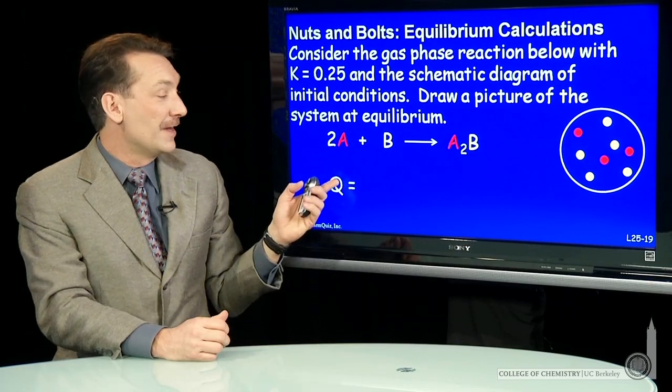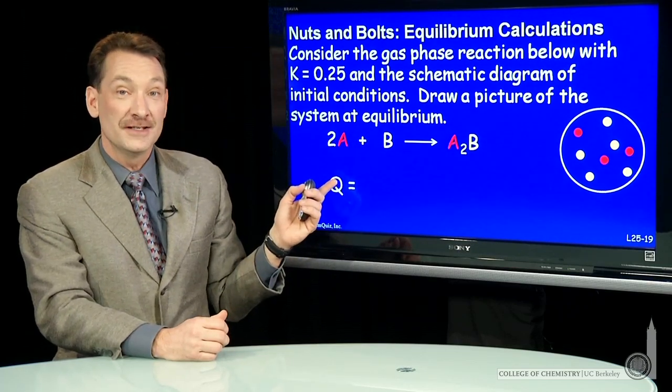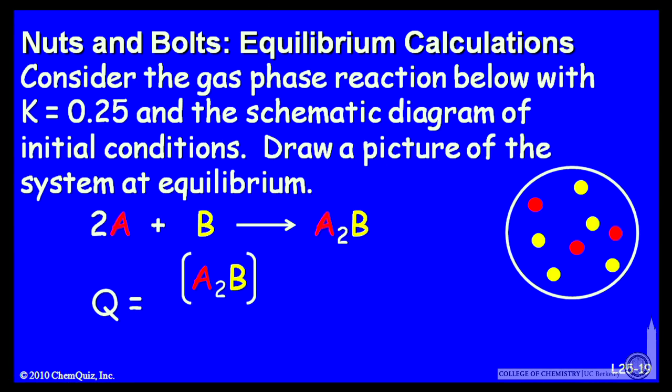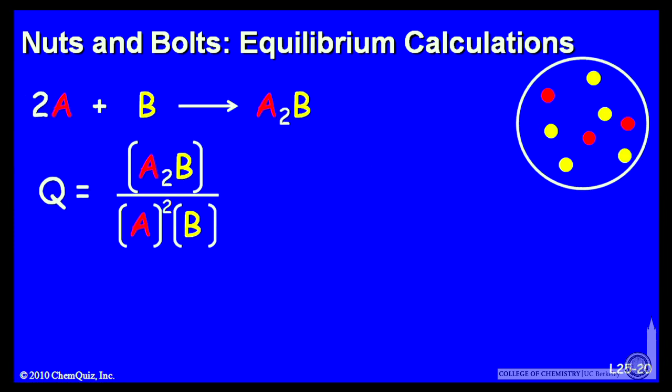The reaction quotient for this mass action expression is the products over the reactants. Remember, we raise everything to its stoichiometric coefficient as the power. So A will be raised to the power of 2, and B as another reactant in the denominator. Products over reactants is our reaction quotient.